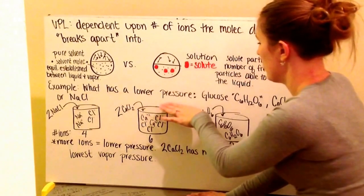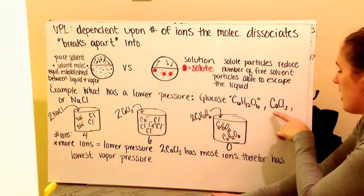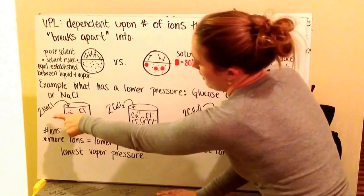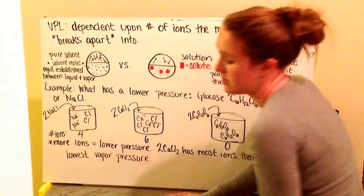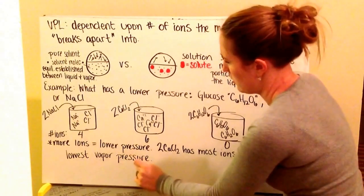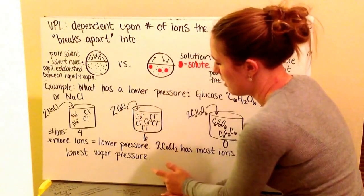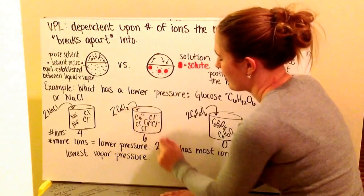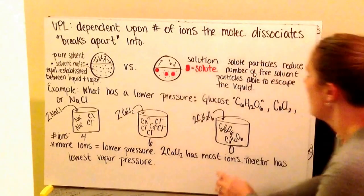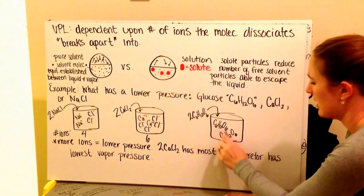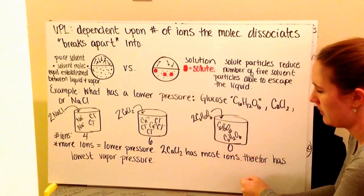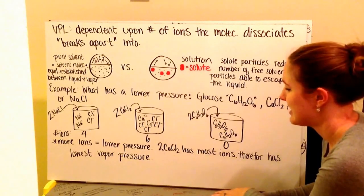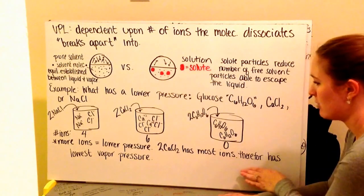An example: which solution has the lower vapor pressure — glucose in water, calcium chloride in water, or sodium chloride in water? This depends on the number of ions each dissociates into. Two moles of NaCl gives two sodium ions and two chloride ions — four total ions. Two moles of CaCl₂ gives two calcium ions and four chloride ions — six total ions. Glucose doesn't break into ions at all; it stays as one unit. More ions means lower pressure, so two moles of CaCl₂ dissociating into six ions gives the lowest vapor pressure.